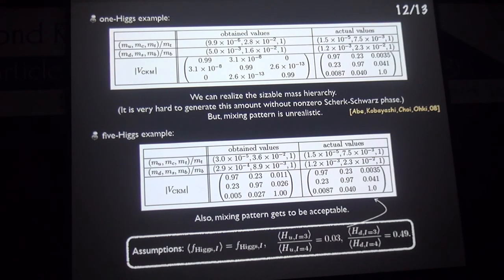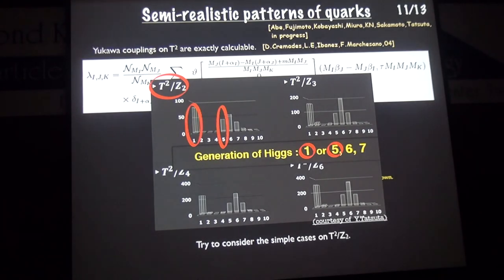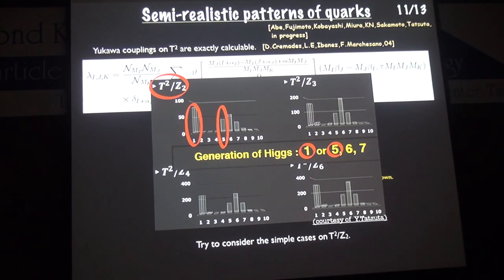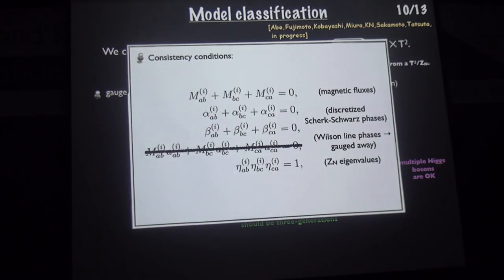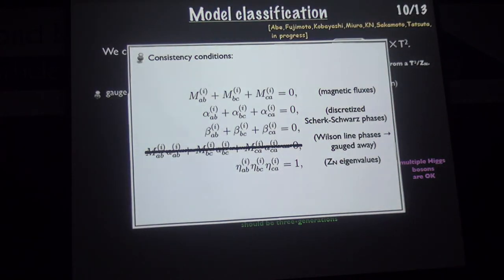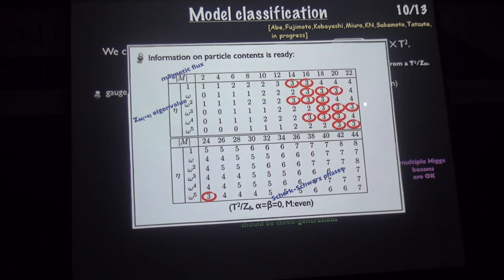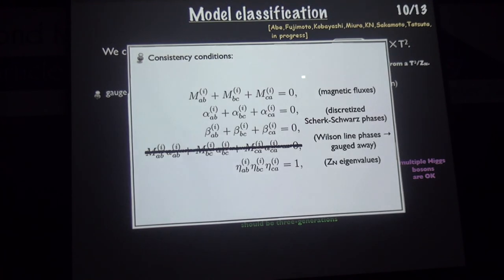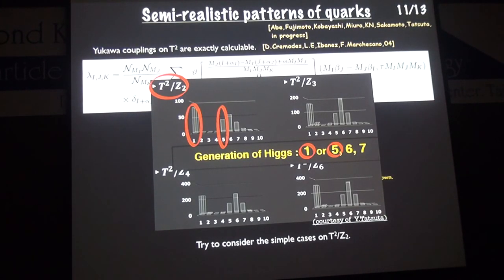Q: For the Higgs sector — if you take a large magnetic flux M, can you still have one or five generations of Higgs? A: Yes. The constraint on the parameters from the system limits the possible Higgs patterns, and the fermion profile with three generations is also limited. So the possible number of Higgs fields is limited to only these candidates. Thank you.